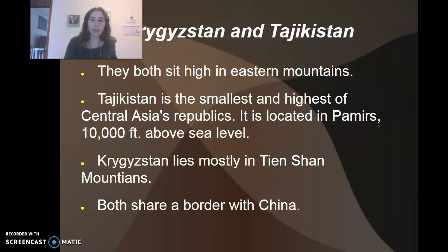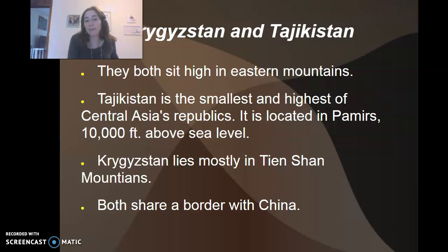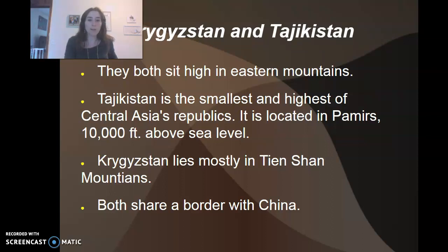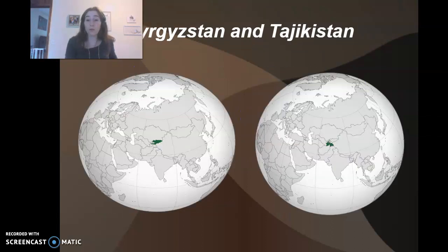Kyrgyzstan and Tajikistan both sit high in the eastern mountains. Tajikistan is the smallest and highest of Central Asia's republics, located in the Pamirs at about 10,000 feet above sea level. Kyrgyzstan lies mostly in the Tian Shan mountains and both share a border with China.